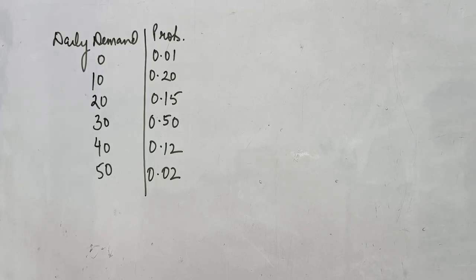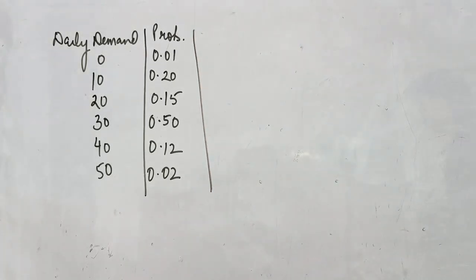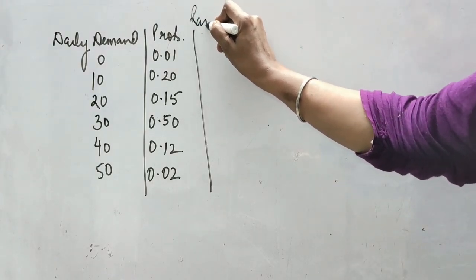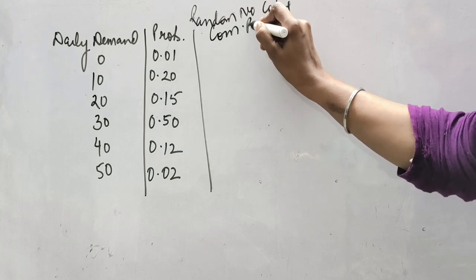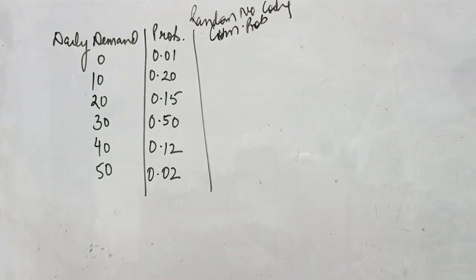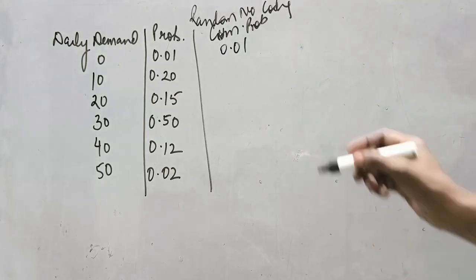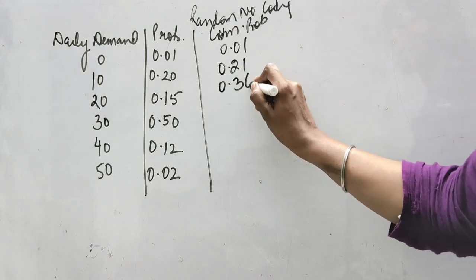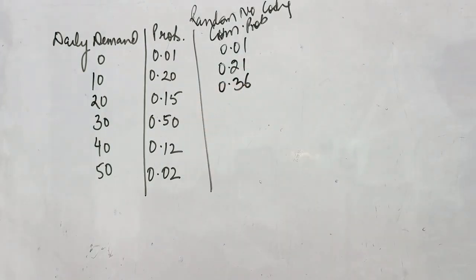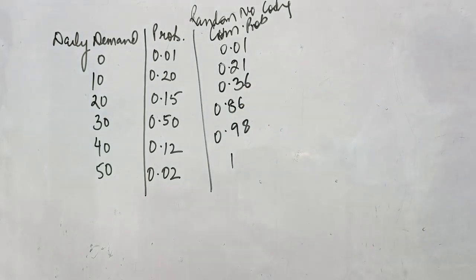So whenever the probability is already given, you can start by designing the random number coding. You will prepare a table showing the random number coding. We are going to code these random numbers. First, create the cumulative probability — if probability is not there, create it first. The first value will be the same: 0.01. Next, add 0.20 to get 0.21. Next will be 0.36, then by adding 0.50 it becomes 0.86. Next will be 0.98, and the last will always be equal to 1.